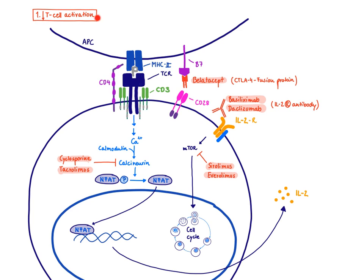Starting with drugs that decrease T-cell activation: cyclosporine and tacrolimus work very similarly — they both inhibit calcineurin. Once CD3 is activated during signal 1, there is an increased calcium influx. Calcium binds to calmodulin, and together they activate calcineurin, a phosphatase. Calcineurin dephosphorylates NFAT, a transcription factor; once dephosphorylated, NFAT enters the nucleus and drives production of IL-2 and other cytokines. Cyclosporine and tacrolimus inhibit calcineurin, so NFAT cannot be activated, resulting in decreased IL-2 production and therefore decreased T-cell proliferation.